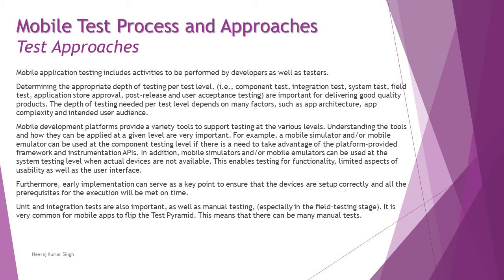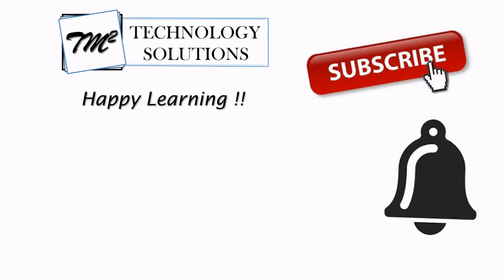Putting it all together: we covered the test process — what activities can be performed and organized for mobile application testing — and on the other hand, the test approaches, what factors need to be considered in order to design and perform the strategy for mobile application testing. That's all from this particular tutorial. Should you have anything, feel free to comment below. In our next tutorial we'll be covering sample questions from this chapter — till then, keep learning, keep exploring, and happy learning!